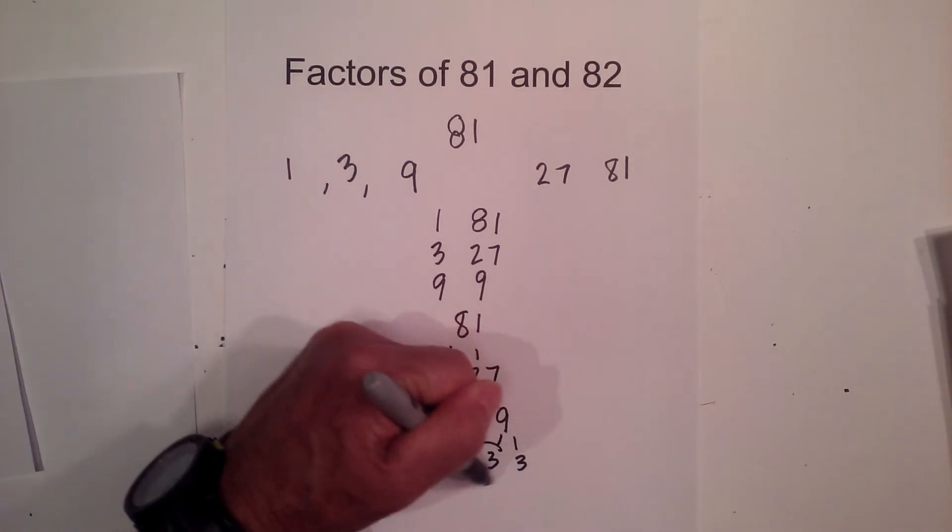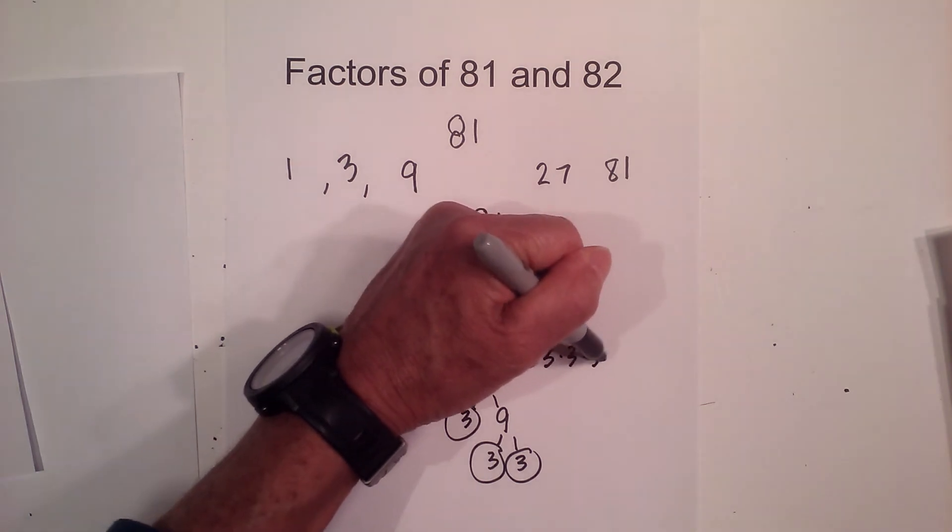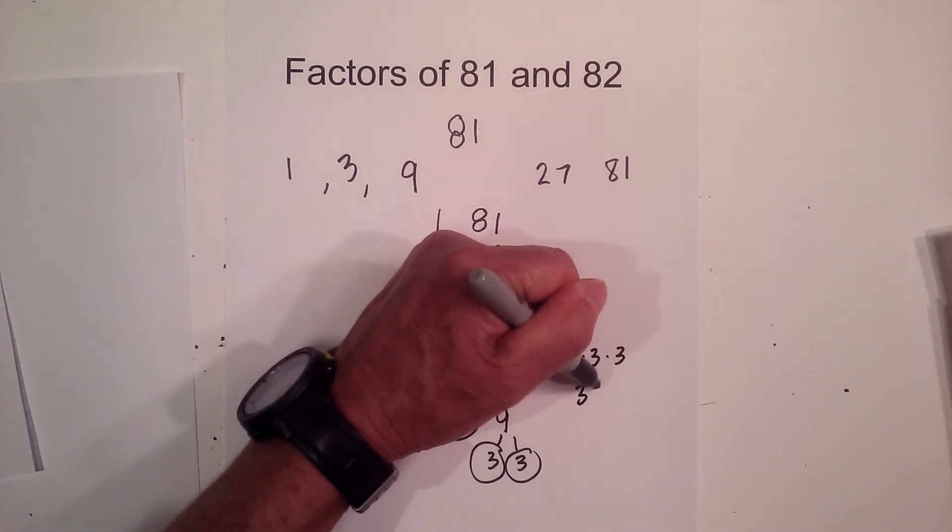And 3 times 3. So the prime factors are 3 times 3 times 3 times 3, or 3 to the fourth.